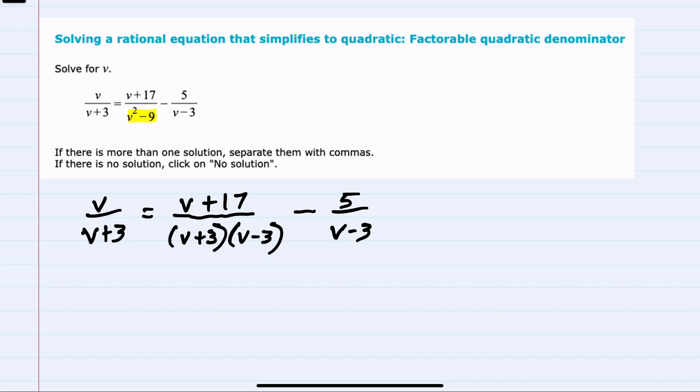From here, now that everything is factored in the denominator, I can identify the lowest common denominator. It will have to have a V plus three and a V minus three. The middle denominator has both, but we already have both. So this is our lowest common denominator, V plus three times V minus three.